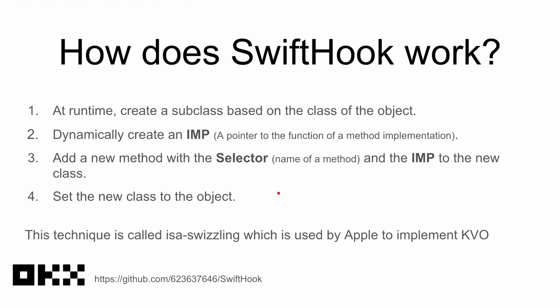How does SwiftHook work? At runtime, first we create a subclass based on the class of the object. Then we dynamically create an IMP — a pointer to the function of a method implementation. Third, we add a new method with a selector and the IMP to the class. Then we set the new class to the object. This technique is called isa swizzling, which is used by Apple to implement KVO.